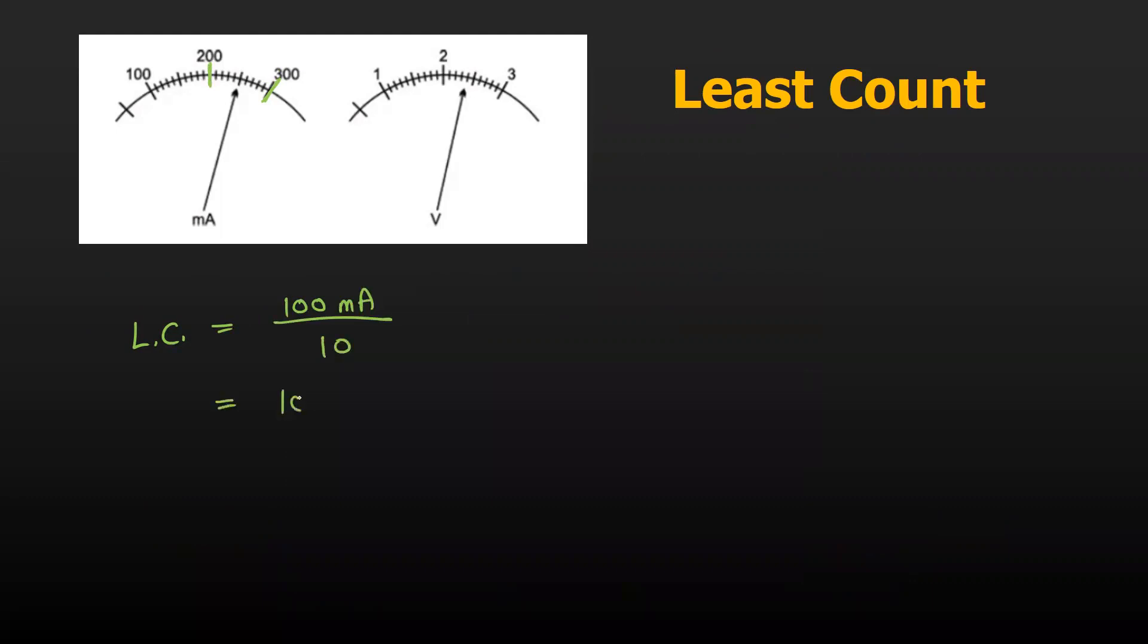For the voltmeter, it is divided between 2 volts to 3 volts, and there are again 10 divisions. So the least count for the voltmeter would be 1 volt divided by 10, which is 0.1 volts.